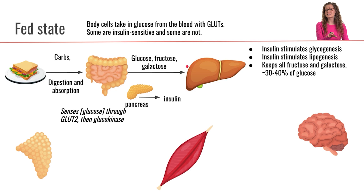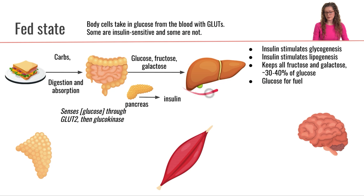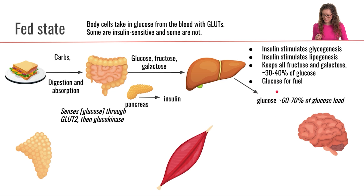The liver keeps some of the monosaccharides absorbed from the diet, but not all. The liver is going to keep all of the fructose and all of the galactose, and then keep about 30 to 40 percent of the glucose just absorbed. At this point the liver is also going to be using glucose for fuel, meaning the glucose the liver releases into the rest of the circulation will be about 60 to 70 percent of the glucose load from the meal.